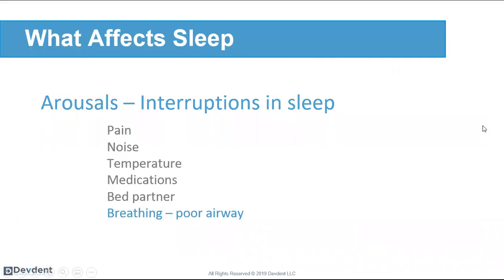What affects sleep? What interrupts it? We call those arousals. Pain disrupts sleep. Noise disrupts sleep — a barking dog, a terrible storm. If you and your bed partner can't agree on temperature, that disrupts sleep. Medications affect sleep, and bed partners affect sleep — if your spouse is snoring, tossing and turning, or has a different schedule. We can educate patients on sleep hygiene and how to properly prepare for bed, but where we most come in is breathing and the poor airway.